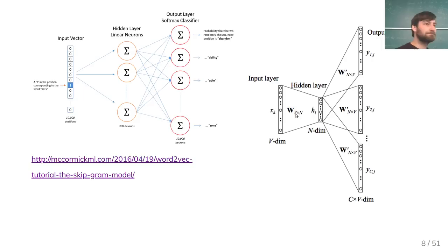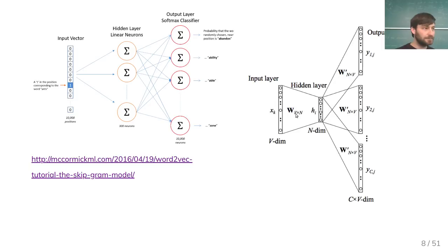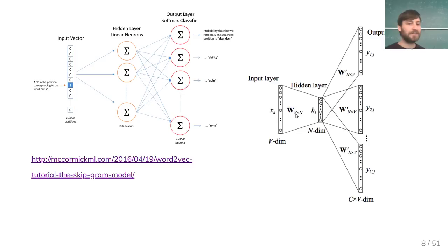Does word order matter in the context window? No — both approaches don't care about word order. It's binary: are you in the context or not? If you represent a word in this 300-dimensional space, in neural network language, the activation of the hidden layer is the representation of the word. Because it's a linear layer and the input is one-hot, it's just a single column of the matrix.